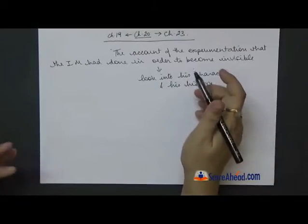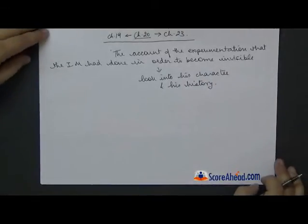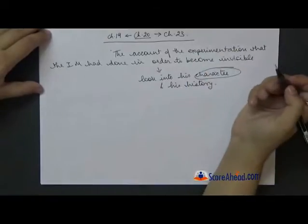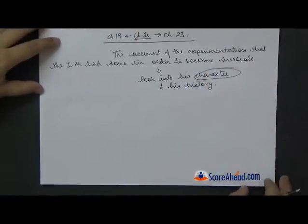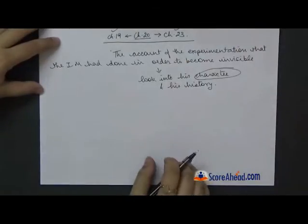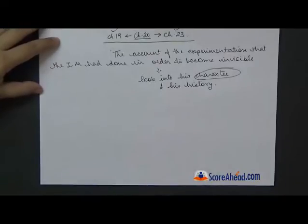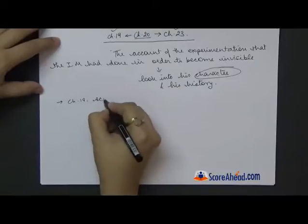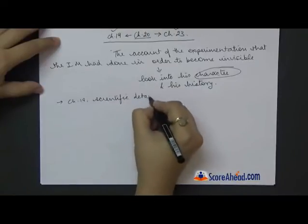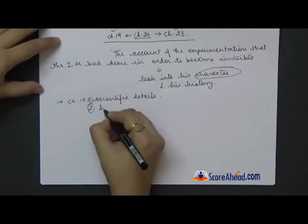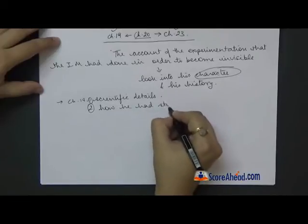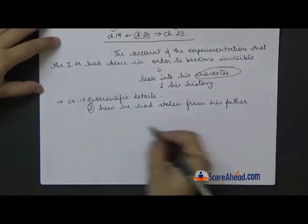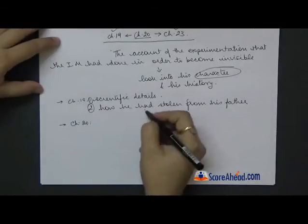What kind of a person was he, what did he go through, and things like that you need to know just to understand the character. This starts from chapter 19 and goes up to chapter 23. This is like a background of the Invisible Man. In the last chapter, he had told us the scientific details of his experiment and also how he had stolen from his father, because of which his father had actually shot himself. In chapter 20, we move on from here.